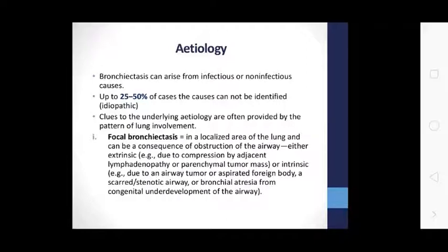Clues to underlying etiologies are often provided by the pattern of lung involvement. Focal bronchiectasis, in a localized area of the lung, can be a consequence of airway obstruction — either extrinsic, such as compression from adjacent lymphadenopathy or a parenchymal tumor mass, or intrinsic, such as an airway tumor, aspirated foreign body, scarred stenotic airway, or bronchial atresia from congenital underdevelopment of the airway.